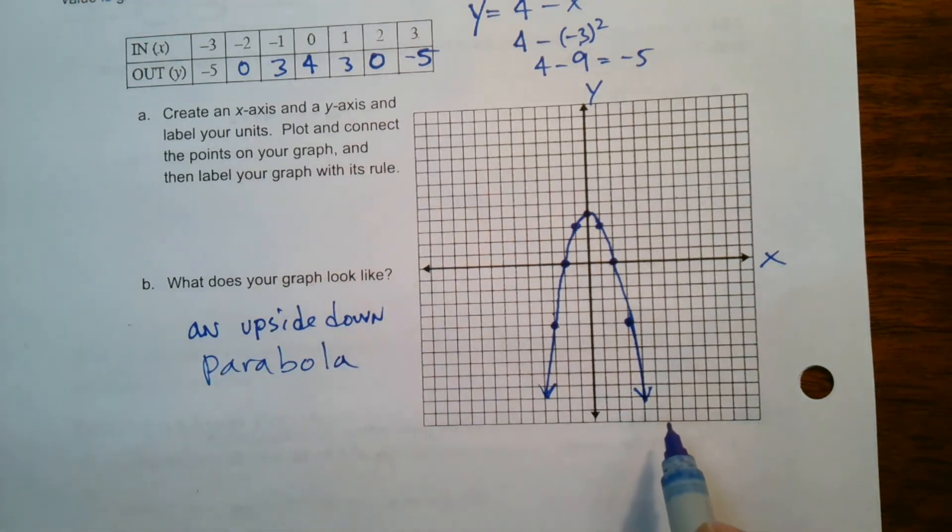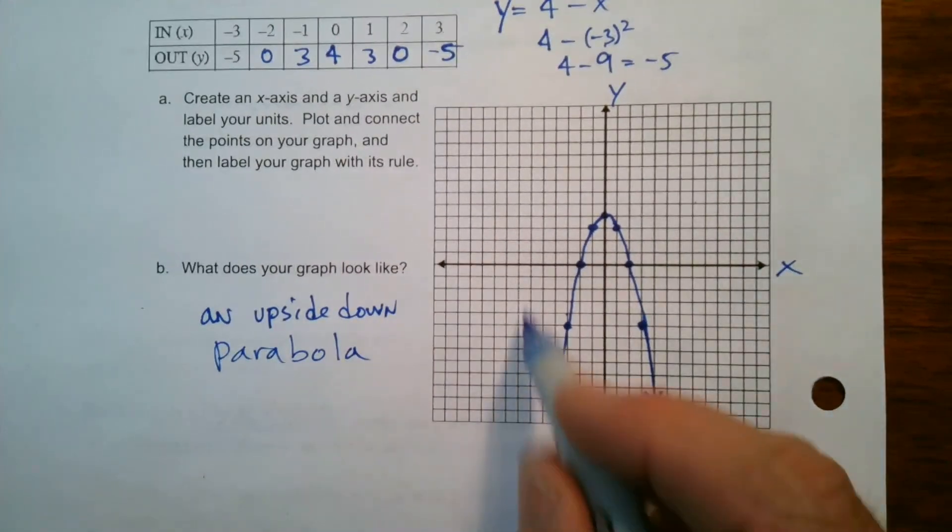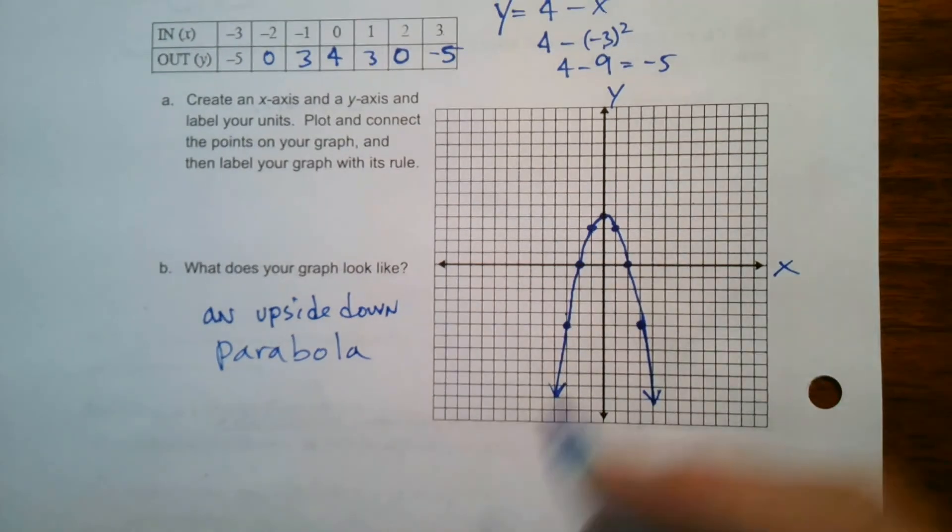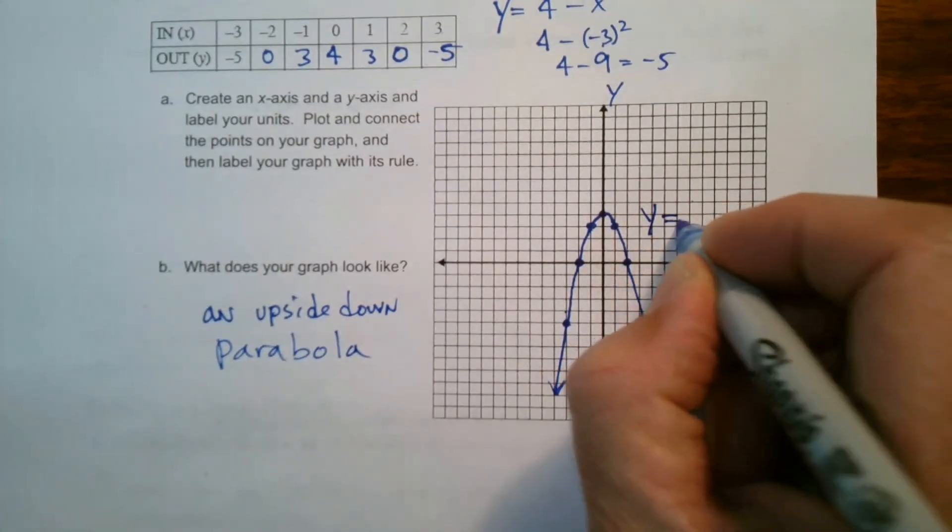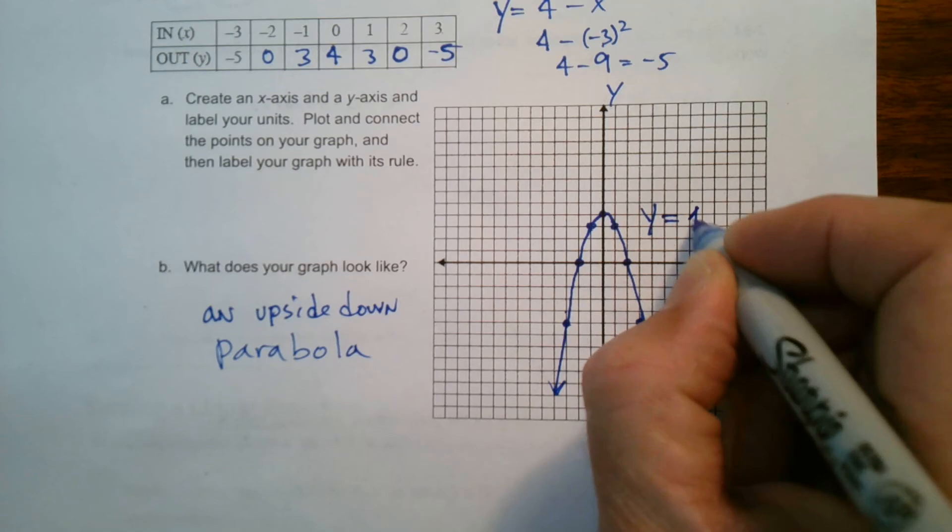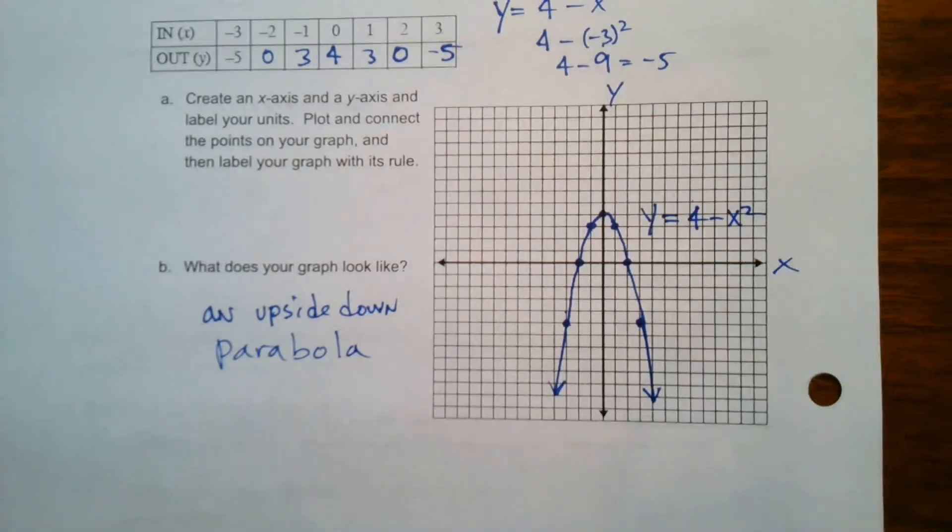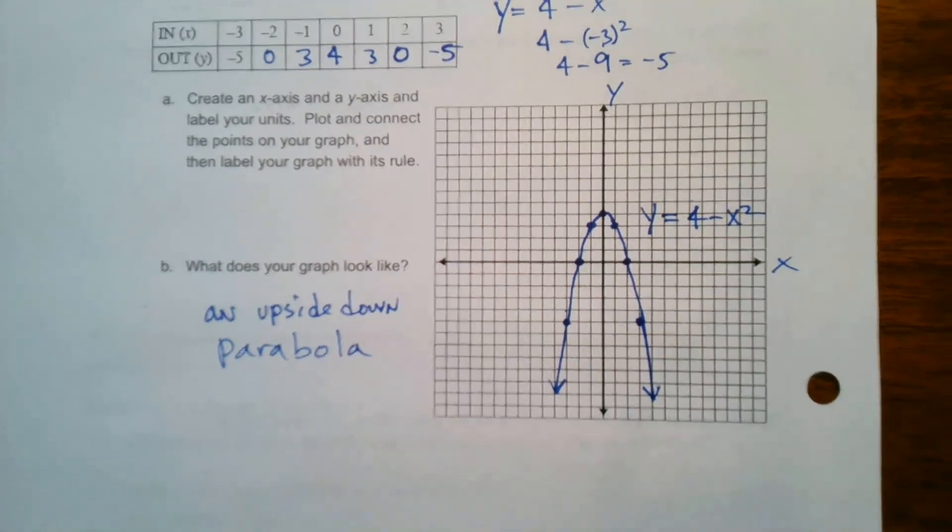Or a parabola open downward instead of open up. You can say that. So that's what that looks like. Or an upside down U. If you didn't know the word parabola yet, if you weren't sure what that was, it's a U, an upside down U, but we do call that a parabola. And then let's label our graph Y is equal to four minus X squared. We put the name of the graph right on the graph. All right. There you go.